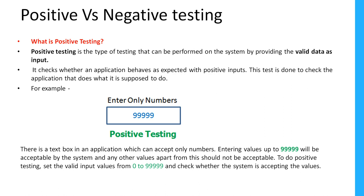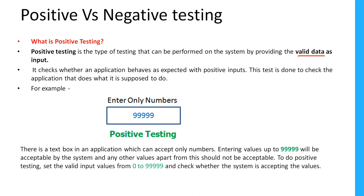Simply put, positive testing is a type of testing performed on the system by providing valid data as an input. We always need to provide valid data and check whether we are getting the expected output or not. Basically, it checks whether an application behaves as expected with positive inputs.